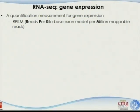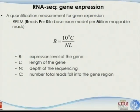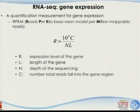So these three factors determine the number of reads, and the measurement for that is something very simple. It was first presented in that Nature Methods paper I mentioned. It's called RPKM, or reads per kilobase of exon model per million mappable reads. R here is the expression level of the gene — something we want to estimate. C is the number of total reads falling into this region, N is the depth of sequencing, and L is the length of the gene.